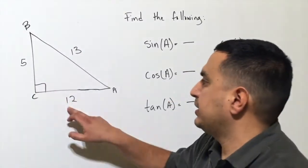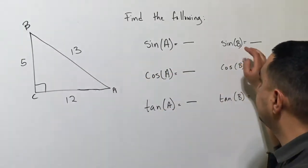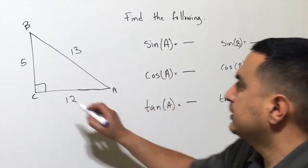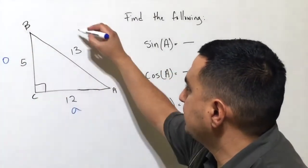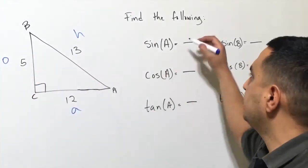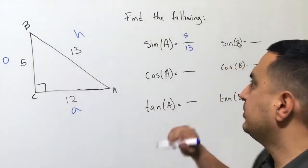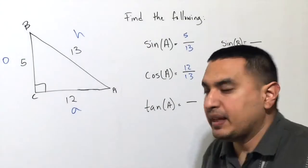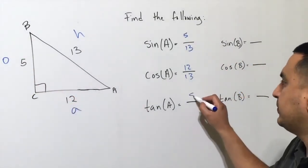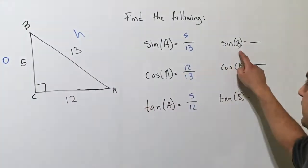Now let's look at an actual example with sides 5, 12, and 13. For angle A: the opposite is 5, the adjacent is 12, and the hypotenuse is 13. So sine of A is opposite over hypotenuse: 5/13. Cosine of A is adjacent over hypotenuse: 12/13. Tangent of A is opposite over adjacent: 5/12.